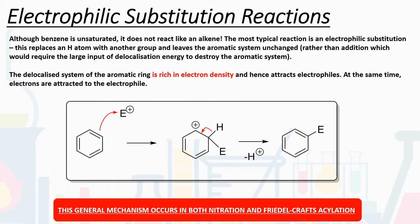While benzene is an unsaturated molecule, it doesn't undergo addition reactions like an alkene. The reason is we don't want to break the delocalization — we don't want to lose this delocalization energy, the real stability of the molecule due to the delocalized electrons. If we did an addition reaction, the aromatic delocalization would be disrupted, requiring a really large input of energy equivalent to the delocalization energy to destroy the aromatic system.